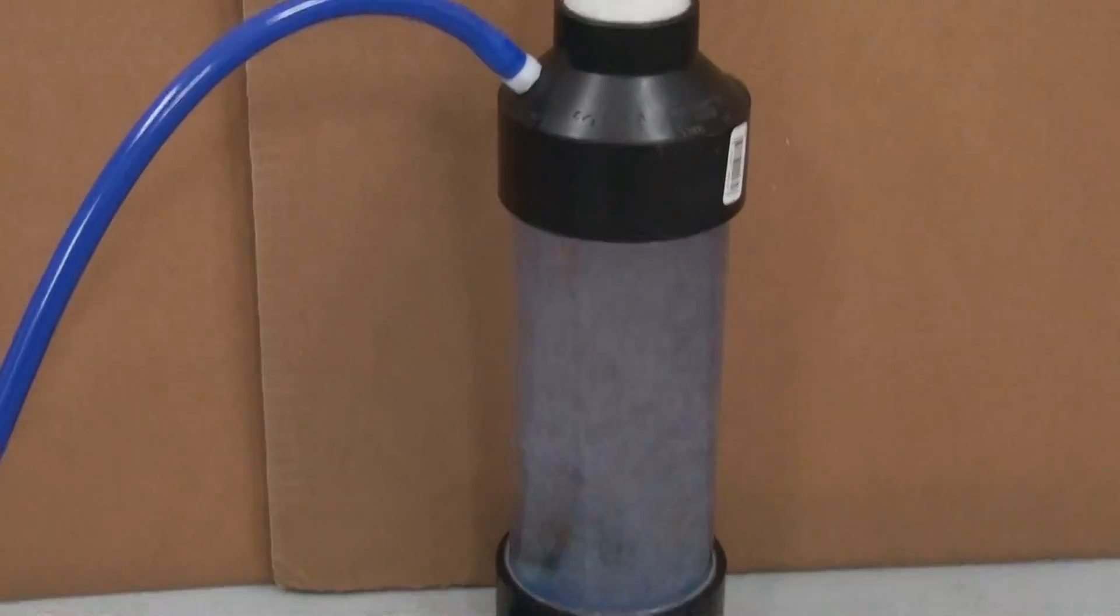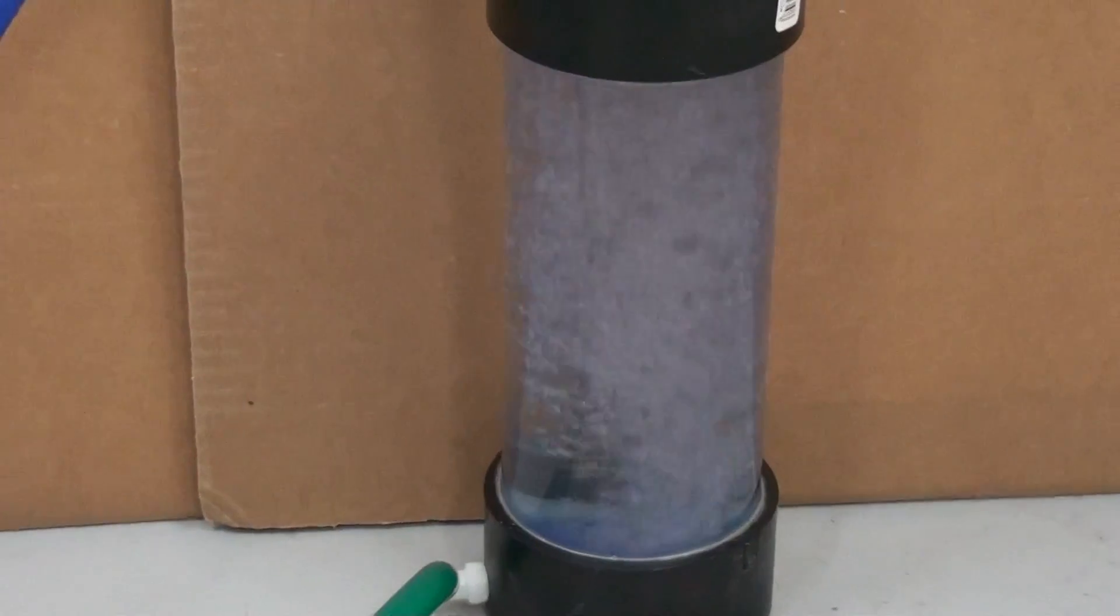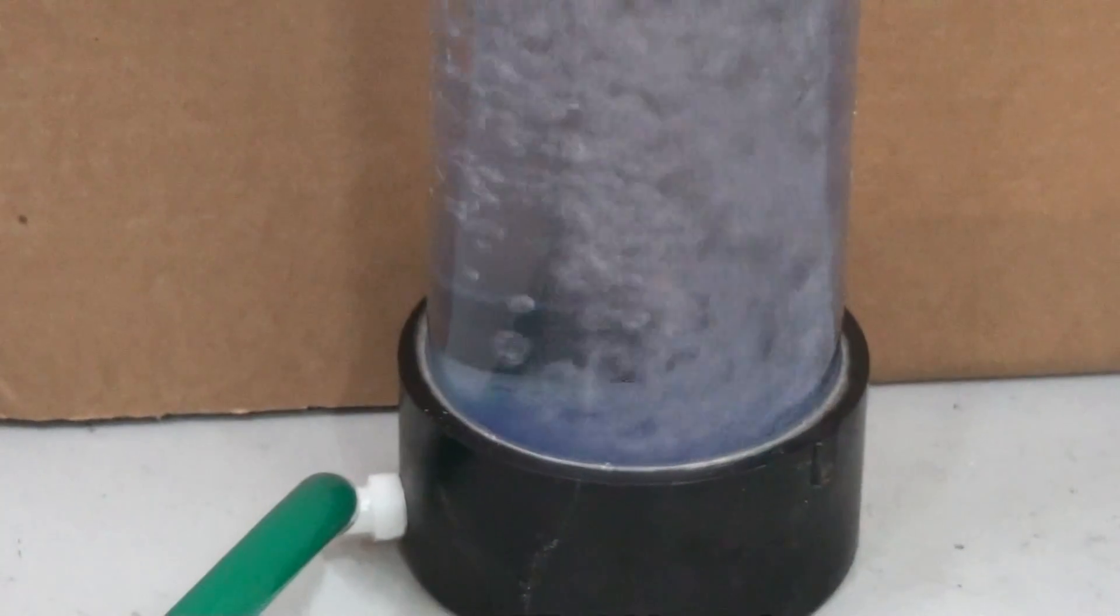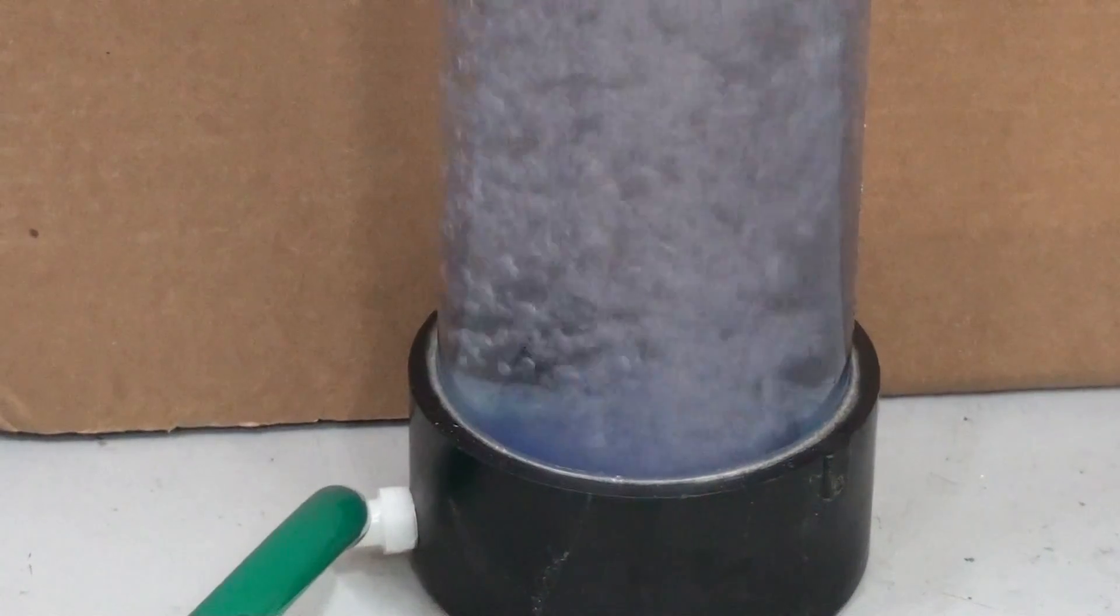Right now you can see that HHO is coming through the bubbler and the bottom of the bubbler has a large air stone so it diffuses the gas up through the water column.